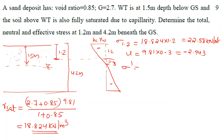Since this point is above the water table due to capillarity, the pore pressure is negative. Sigma dash equals sigma minus U: 22.58 minus (minus 2.943) equals 25.523 kN/m².